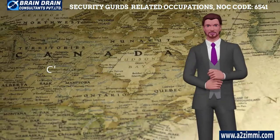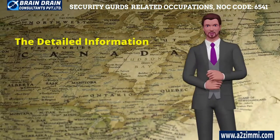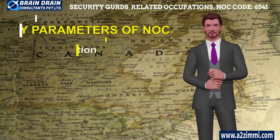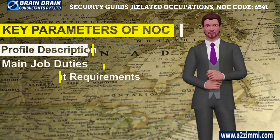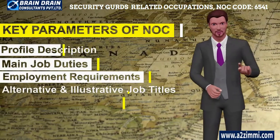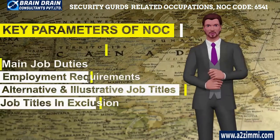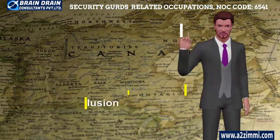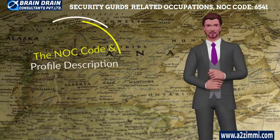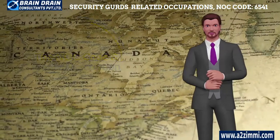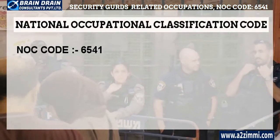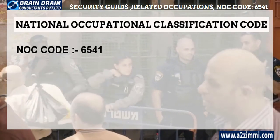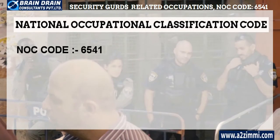This code tells us about detailed information associated with a profile, covering key parameters like profile description or profile lead statements, key responsibility area and main job duties, employment requirements, alternative and illustrative job titles, and job titles in exclusion. Now let's see the NOC Code for this profile. The NOC Code for Security Guards and Related Security Service Occupations is 6541.